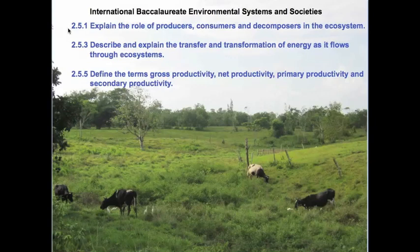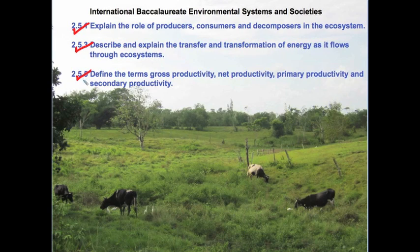This lesson covers learning outcome 2.5.1, which requires us to explain the role of producers, consumers and decomposers in the ecosystem; 2.5.3, to describe and explain the transfer and transformation of energy as it flows through ecosystems; and then a group of definitions in 2.5.5, which include gross productivity, net productivity, primary productivity and secondary productivity.